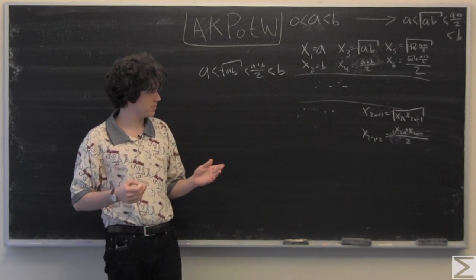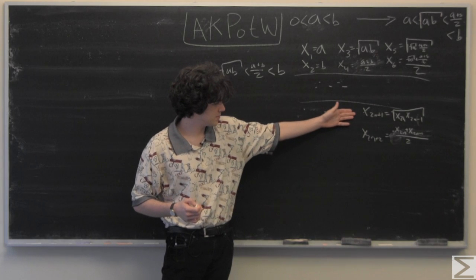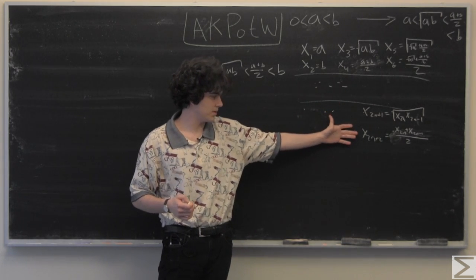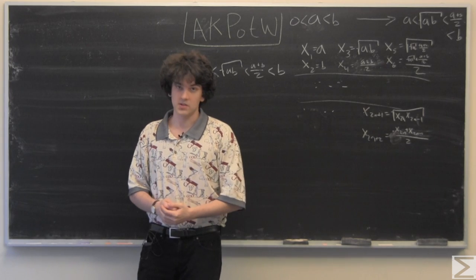We want to prove that the distance between x sub 2n plus 1 and x sub 2n plus 2 goes to 0.